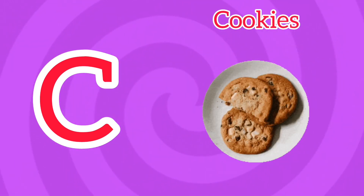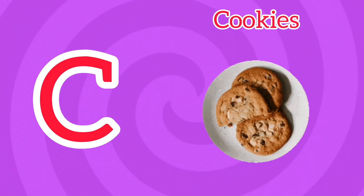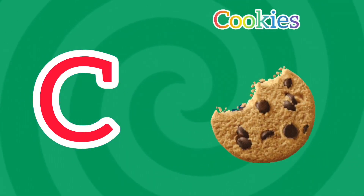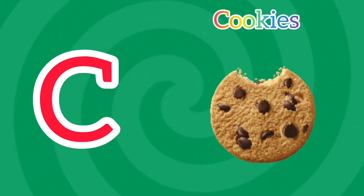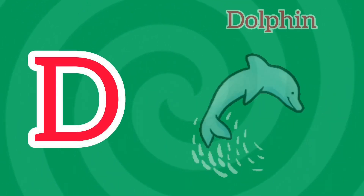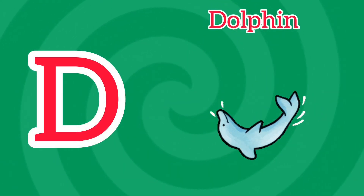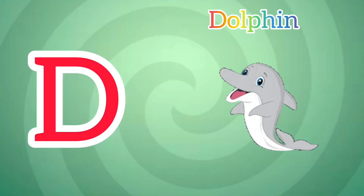C is for Cookie. C, C, Cookie. C is for Cookie. C, C, C. D is for Dolphin. D, D, Dolphin. D is for Dolphin. D, D, D.